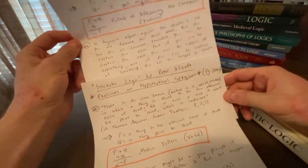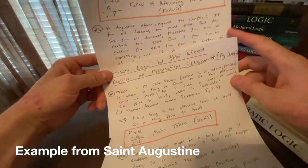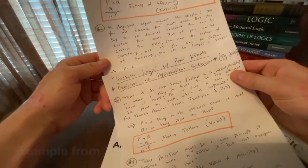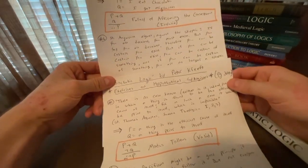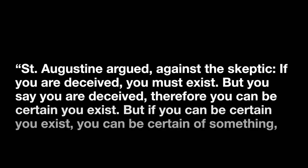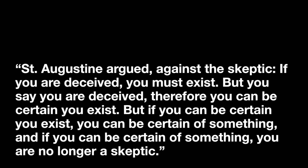How about this? Number six. And this is from St. Augustine. There's a lot of good arguments and interesting arguments here. So this is a little bit more complicated, I suppose. So St. Augustine argued against the skeptic, if you are deceived, you must exist. But if you say you are deceived, therefore you can be certain you exist.